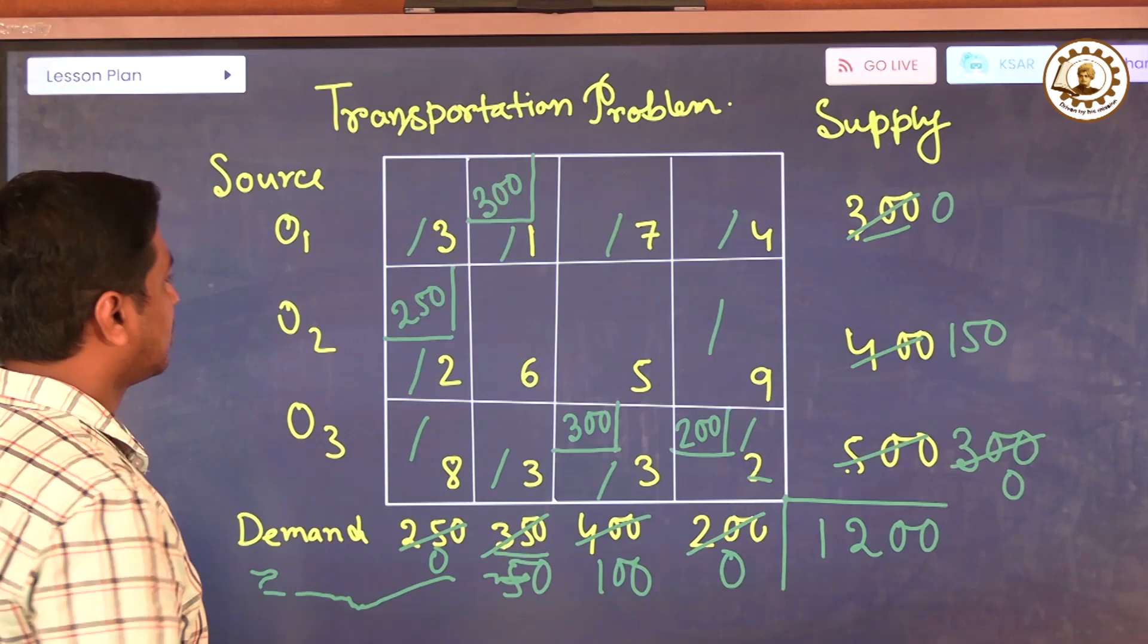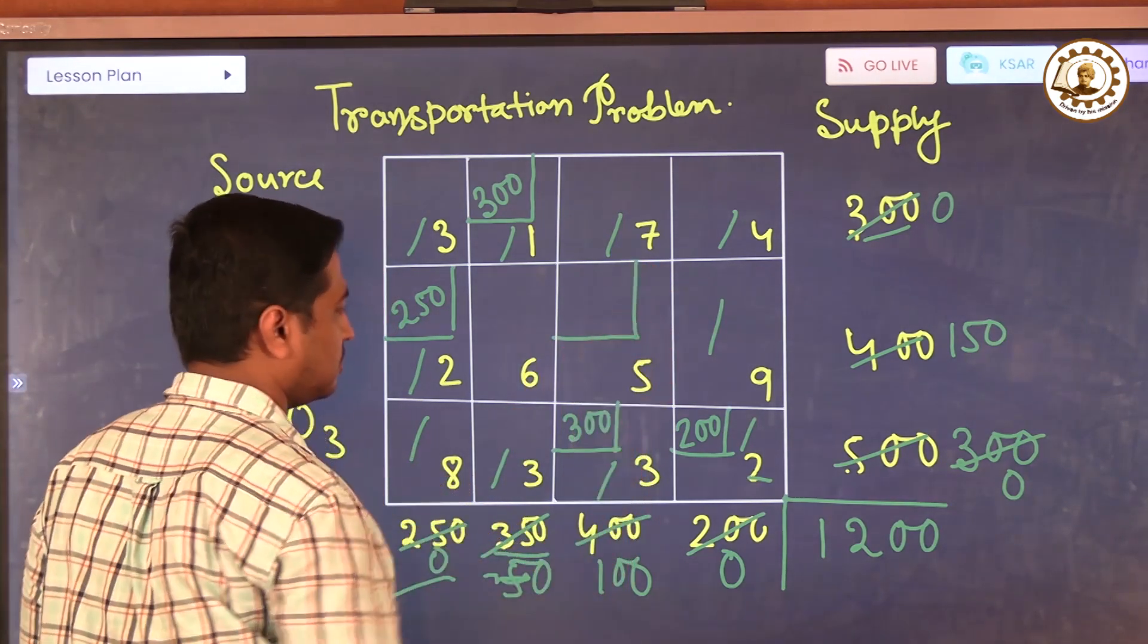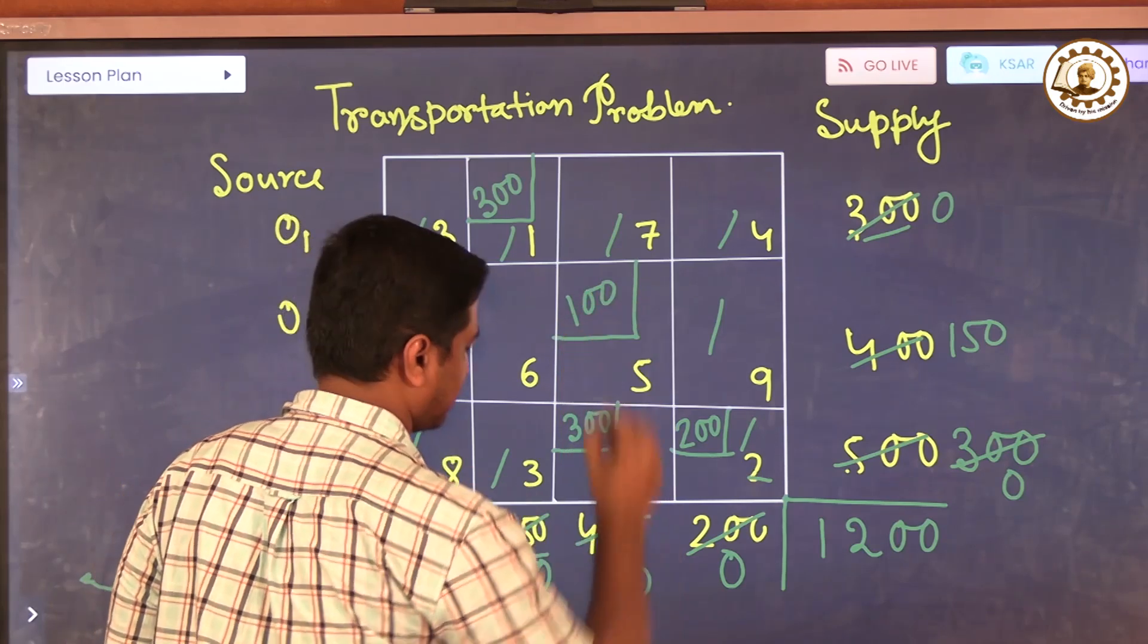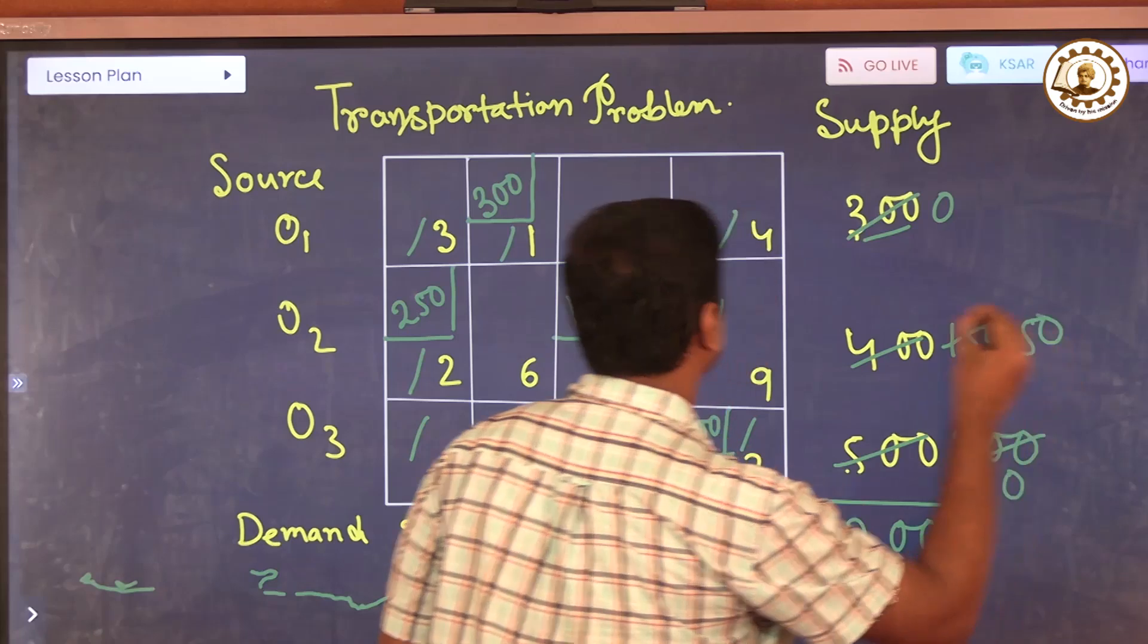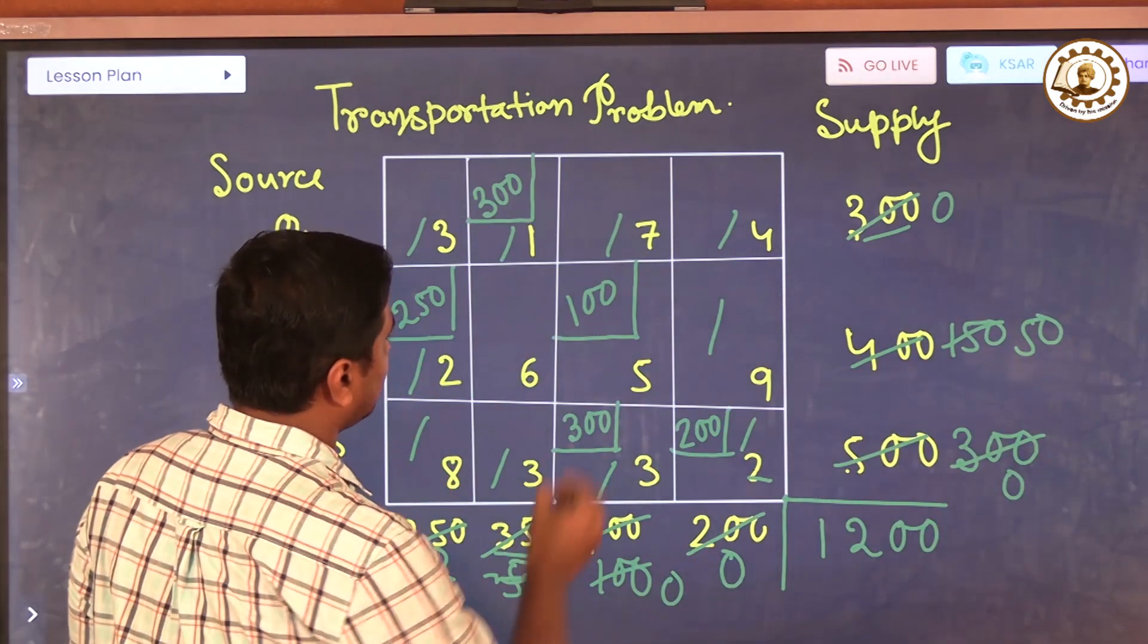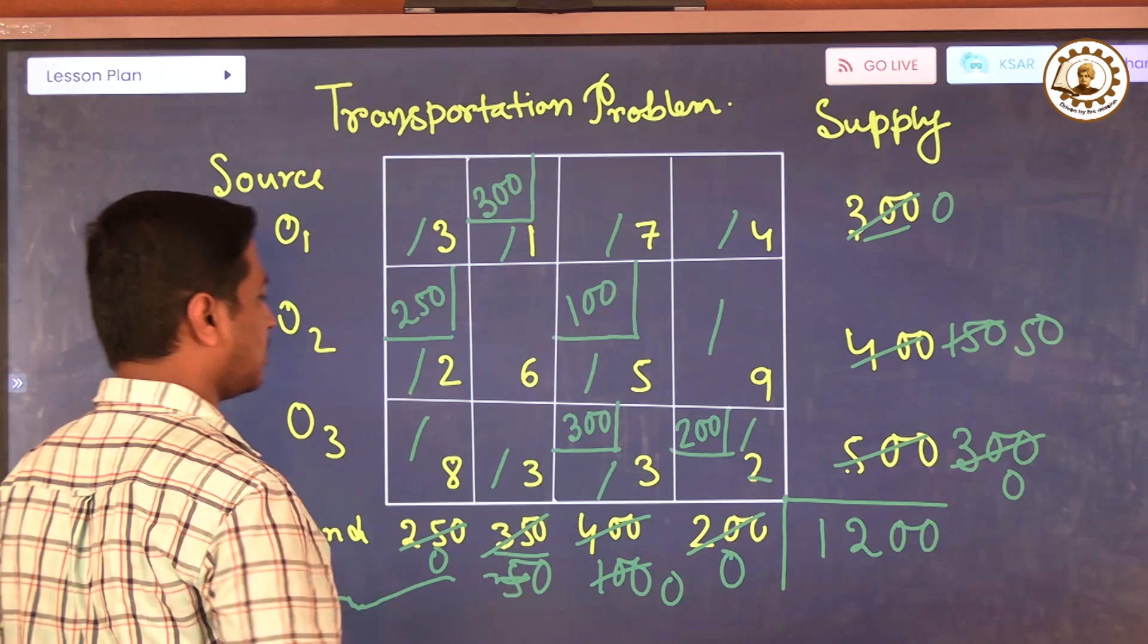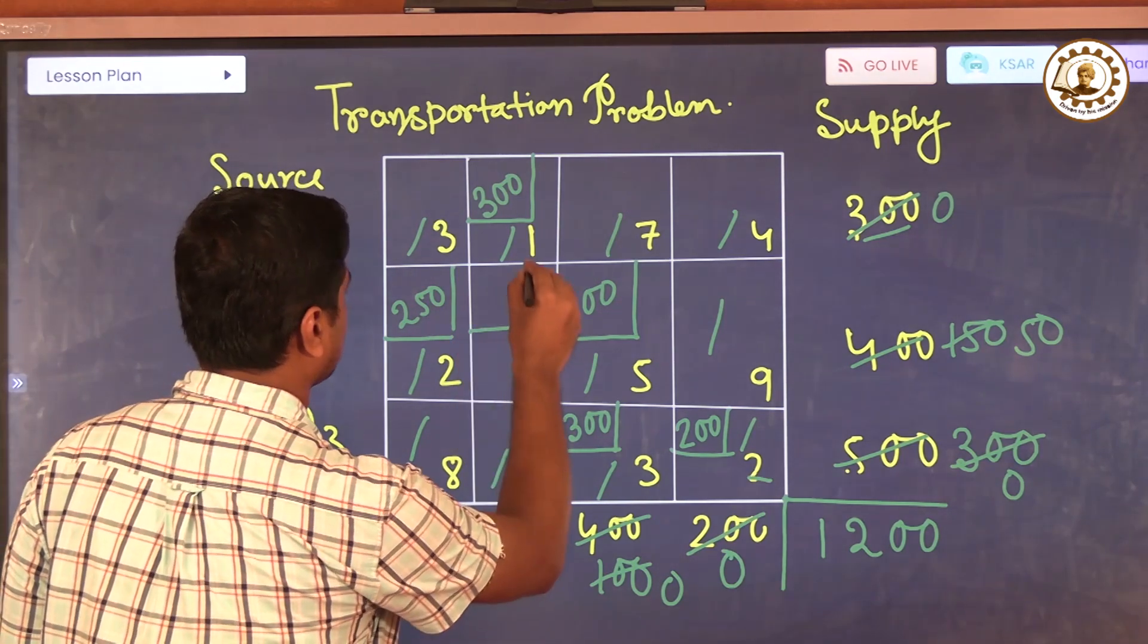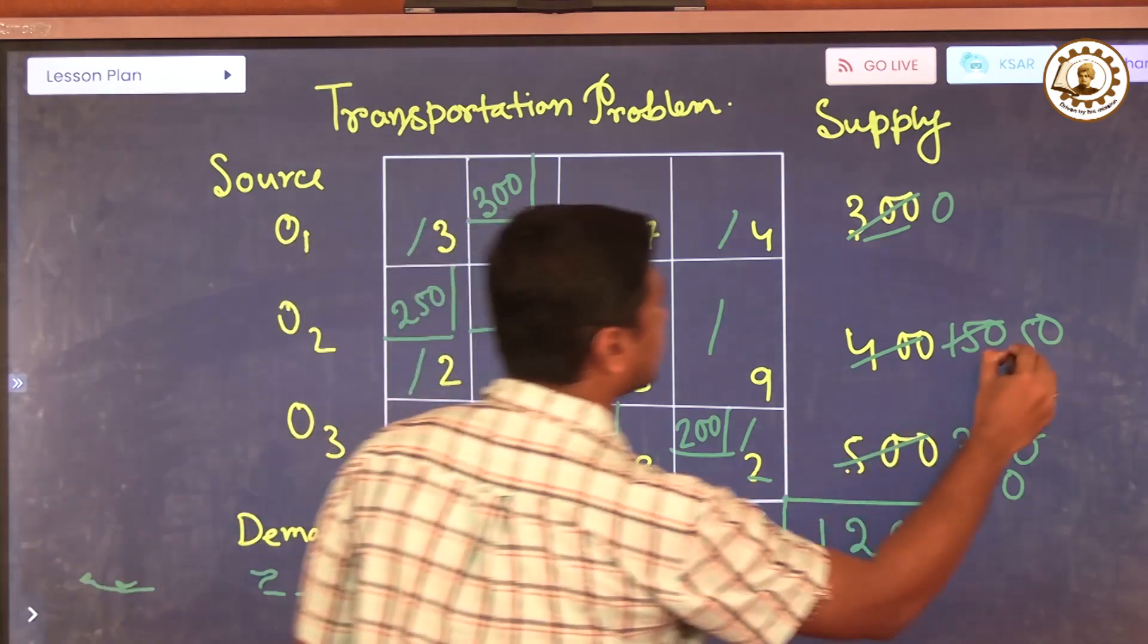Now next, this is five, least cost. This is 100 and this is the remaining 50. This is the deleted part. Now next, this is six. This is 50, zero, and this is 50.